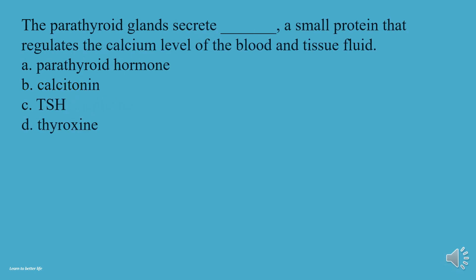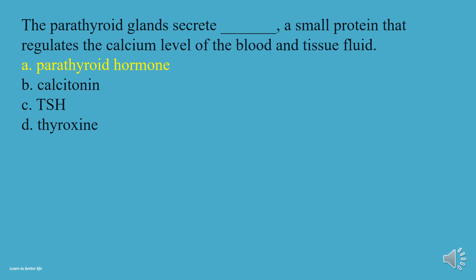The parathyroid glands secrete what — a small protein that regulates the calcium level of the blood and tissue fluid? A, Parathyroid hormone. B, Calcitonin. C, TSH. D, Thyroxine. The answer is A, Parathyroid hormone.